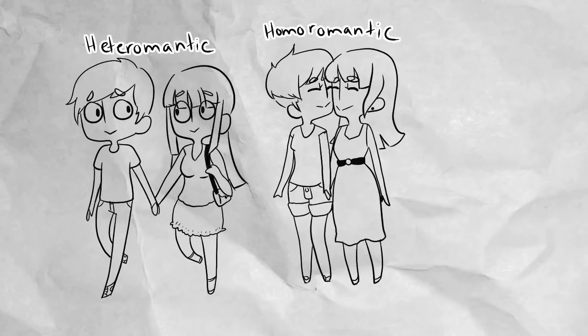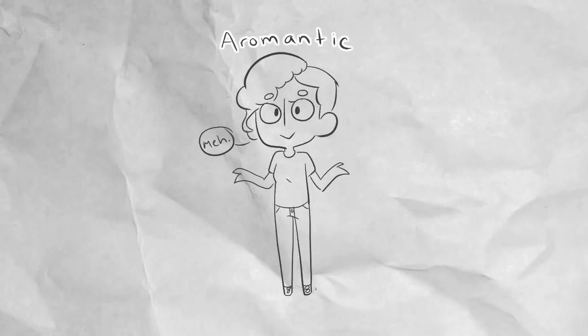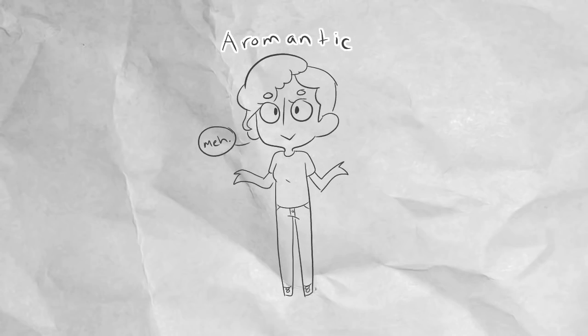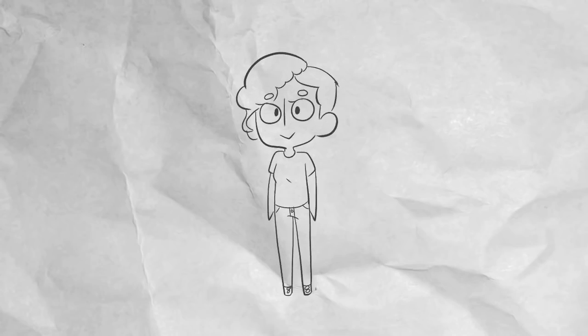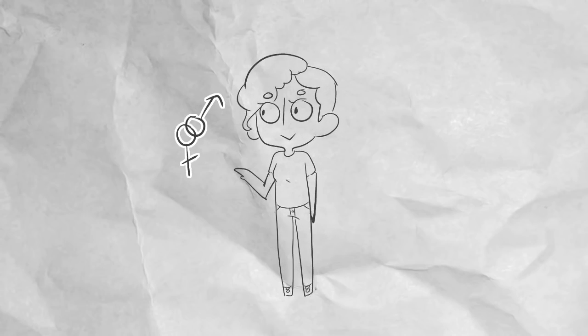Heteroromantic, homoromantic, bi-romantic, pan-romantic, and aromantic are all types of romantic attraction, and these can be mixed to fit with other types of sexual attraction. An example of this is bisexual and homoromantic.